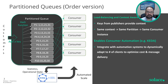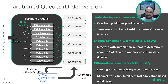Partition queues dynamically accommodate the number of consumers bound to the partition queue. So now you have horizontal and dynamic scaling. And there's more. In addition, you have fast, intelligent rebalancing.